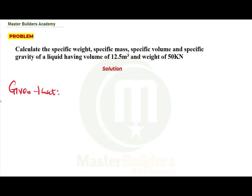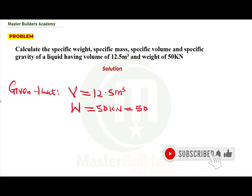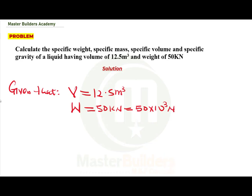Given: volume V = 12.5 m³. Weight W = 50 kilonewtons, which equals 50 × 10³ newtons — remember that kilo means 10 to the power of 3. Since we are dealing with fluid properties, acceleration due to gravity is constant.